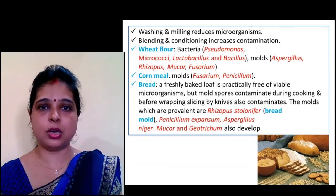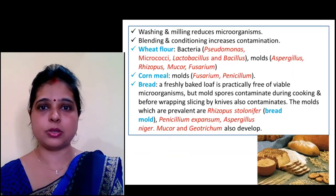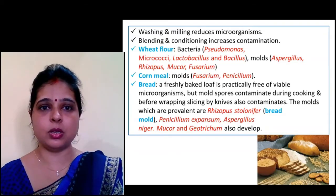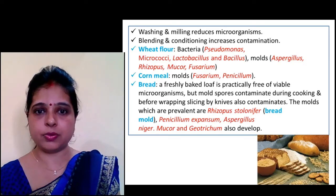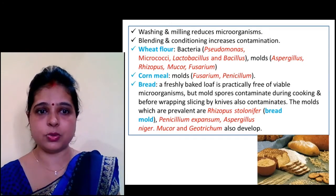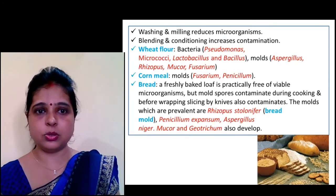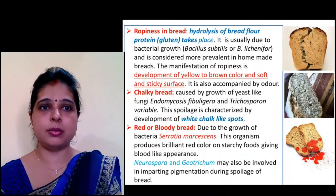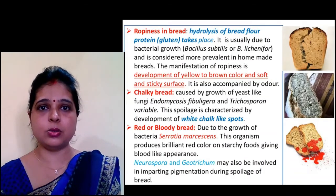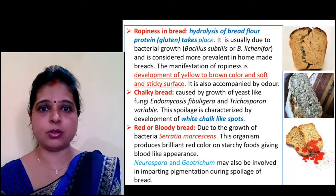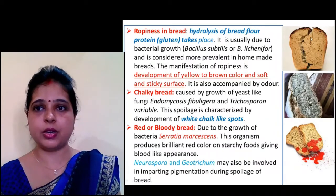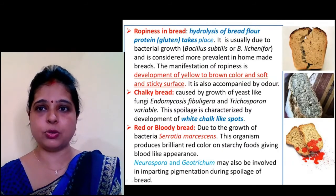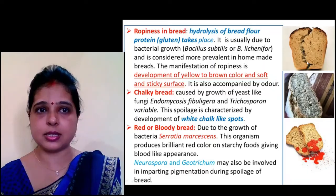Key microorganisms involved in cereal spoilage include Pseudomonas, Micrococci, Lactobacillus, and Bacillus among bacteria, and Aspergillus, Trichoderma, Mucor, and Fusarium among molds. In bread, three types of spoilage occur. The first is ropiness in bread, which occurs due to hydrolysis of gluten in bread flour, resulting in the development of a yellow to brown color and a soft, sticky surface.